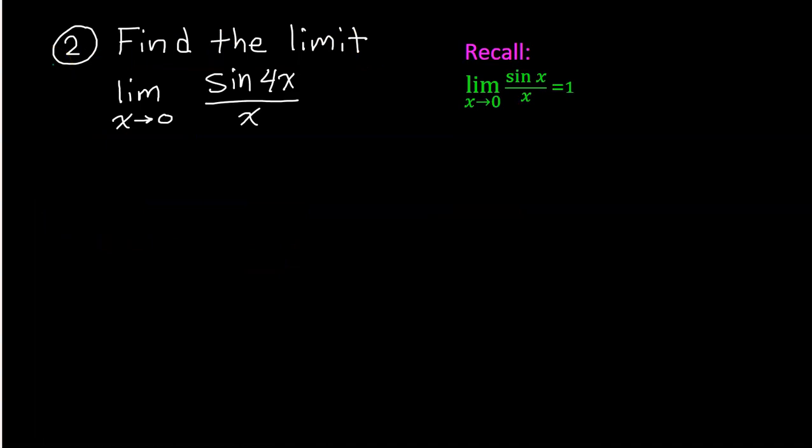For example 2, we are going to find the limit of sin(4x) over x as x approaches 0. Now, this problem is pretty close to this memorized fact. The only difference is instead of having sin(x), we have sin(4x). Well, if we had a 4 also in the denominator, it would still fit the pattern. We would have the sin of something divided by that same something, the same pattern that we know the limit of. So the question is, how can I get a 4 in the denominator without actually changing the value of the problem?